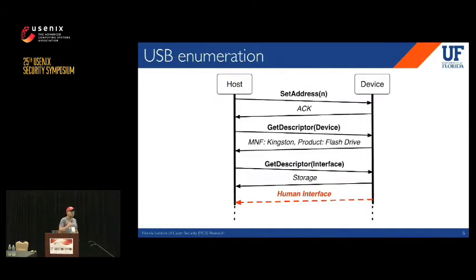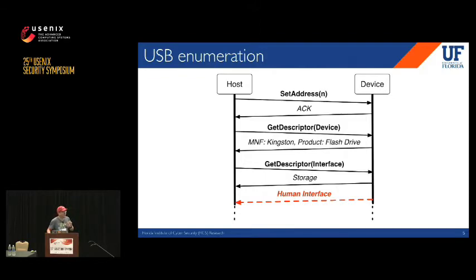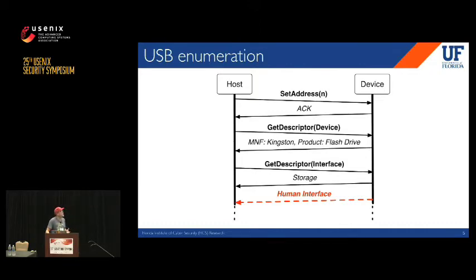But before we use superglue to destroy our USB ports, we probably want to know something deeper about USB. The way for the USB host machine to recognize a device is called USB enumeration. When the device is plugged in, the host machine asks for information, and the device provides it — for example, manufacturer and product name. Then the device requests functionality from the operating system, like storage. In BadUSB attacks, the device would also request a human interface functionality, required for keyboards or other input USB devices.